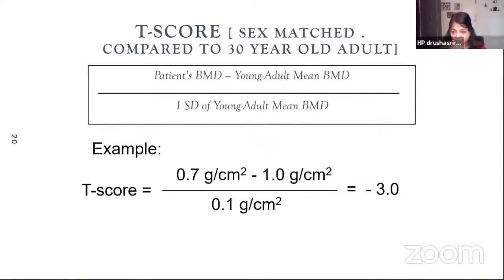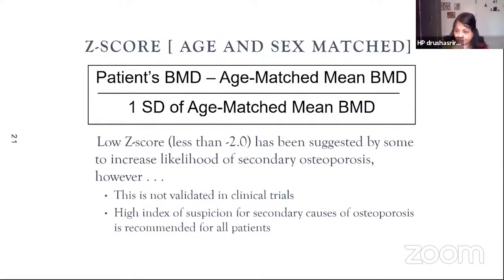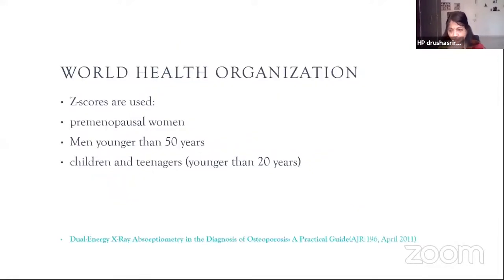What is a T-score? The T-score is when that person is ethnicity- and sex-matched and compared to the young adult reference mean, which is around 30 years. What is a Z-score? That is age- and sex-matched — for example, a 58-year-old woman would be matched with a 58-year-old woman of the same ethnicity. A low Z-score has been suggested to indicate likelihood of secondary osteoporosis. The Z-score should be used for premenopausal women, men younger than 50, and children and teenagers younger than 20. For others, we can use the T-score.